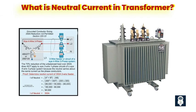In conclusion, neutral current plays a critical role in the operation of medium voltage transformers. By understanding its significance and implementing effective management strategies, electrical professionals can ensure the smooth functioning and longevity of transformer installations. Balancing loads, employing appropriate grounding techniques, and monitoring for potential issues are key practices for neutral current control. As the electrical industry continues to evolve, staying updated on emerging technologies and advancements in neutral current management is essential to proactively address challenges and improve transformer performance.